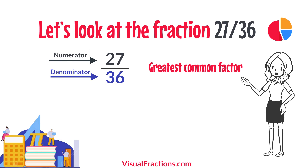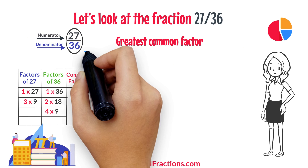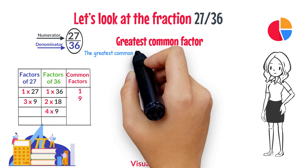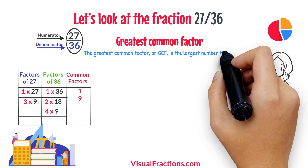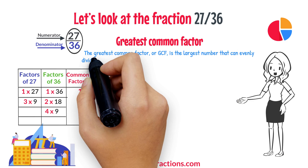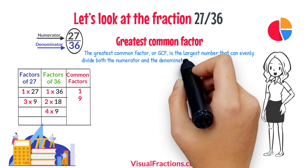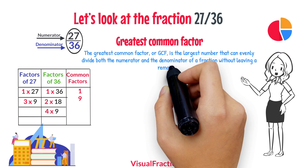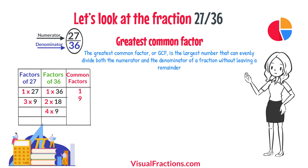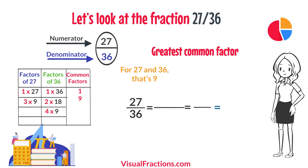The greatest common factor, or GCF, is the largest number that can evenly divide both the numerator and the denominator of a fraction without leaving a remainder. For 27 and 36, that's 9.